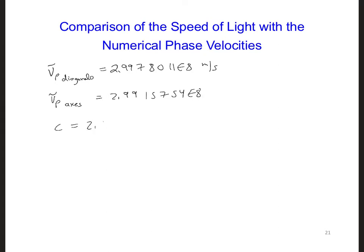And here's the speed of light, 2.99792456E8. So what this means, what we're getting is numerical anisotropy, where the wave propagates at slightly different speeds in different directions in the grid.